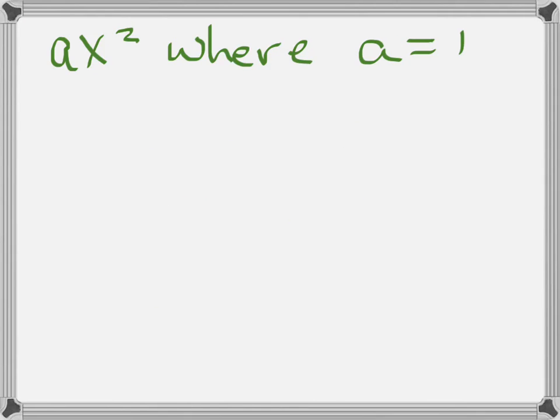The first ones we're going to look at are those where the leading coefficient a in ax squared is equal to 1. Here we have x squared minus 3x plus 2.